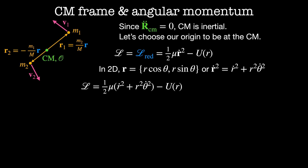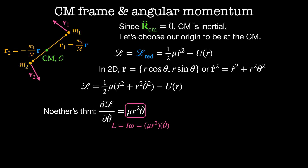Our Lagrangian in these coordinates is one-half mu times (r-dot squared plus r squared theta-dot squared) minus U as a function of r. The transformation theta goes to theta plus delta-theta leaves the Lagrangian unchanged because theta-dot is the same either way. So according to Noether's theorem, dL by d(theta-dot) is a conserved momentum equal to mu r squared theta-dot. This quantity is just the angular momentum — we can see this by writing angular momentum as the moment of inertia mu r squared times omega, which is just theta-dot. The angular momentum, which we'll call little l, is conserved in the system, and we'll use this definition many times in the next few videos.